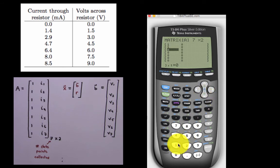We then input the first column as all ones. We use our current data to input the second column to be the current running through the resistor for each data point.